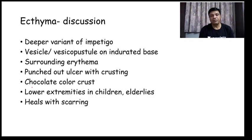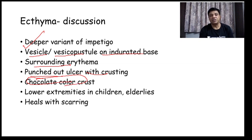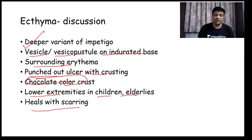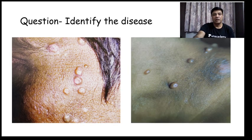Ecthyma is a deeper variant of Impetigo. It starts as vesicles or vesico-pustules on an indurated base, with surrounding erythema. There is a punched-out ulcer with crusting and chocolate-colored crust, usually seen in the lower extremities in children and the elderly, and it heals with scarring. Chocolate-colored crust is characteristic of Ecthyma.